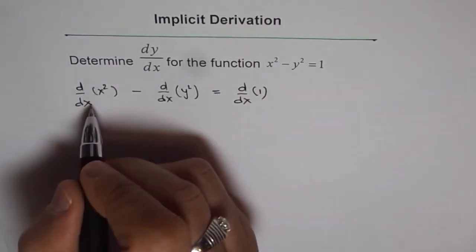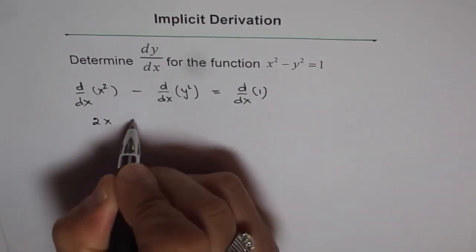Now derivative for x² is 2x. So we have 2x minus,